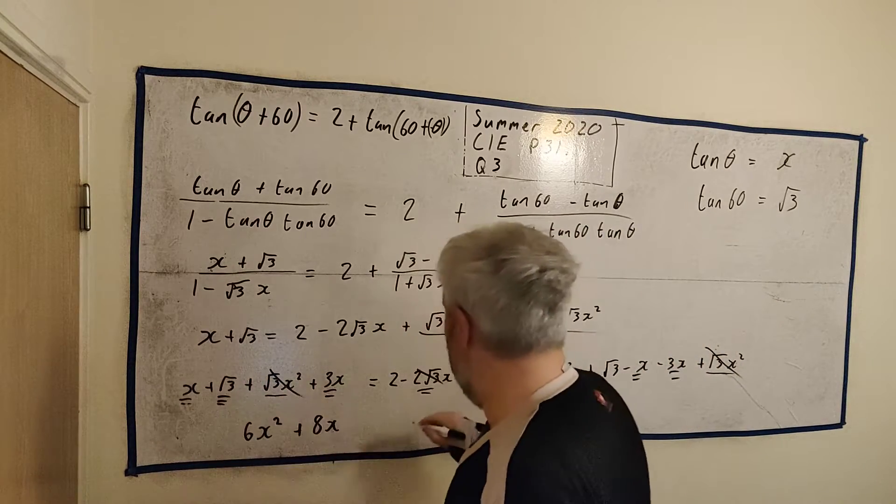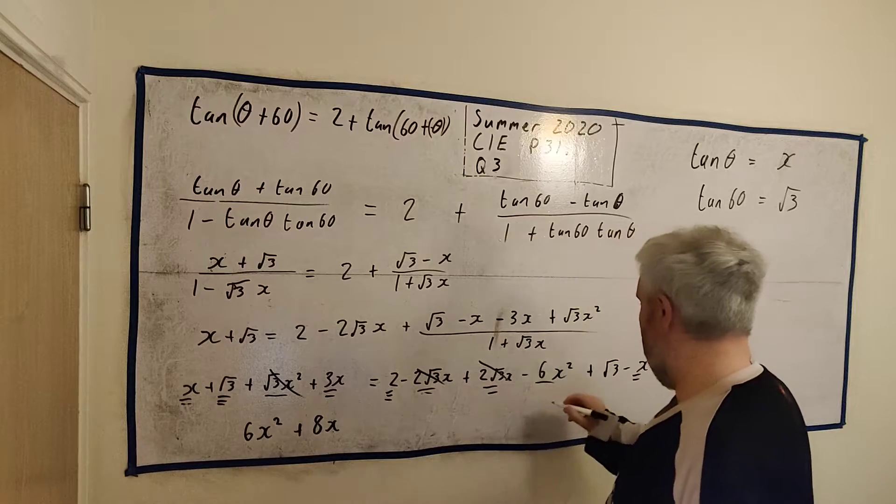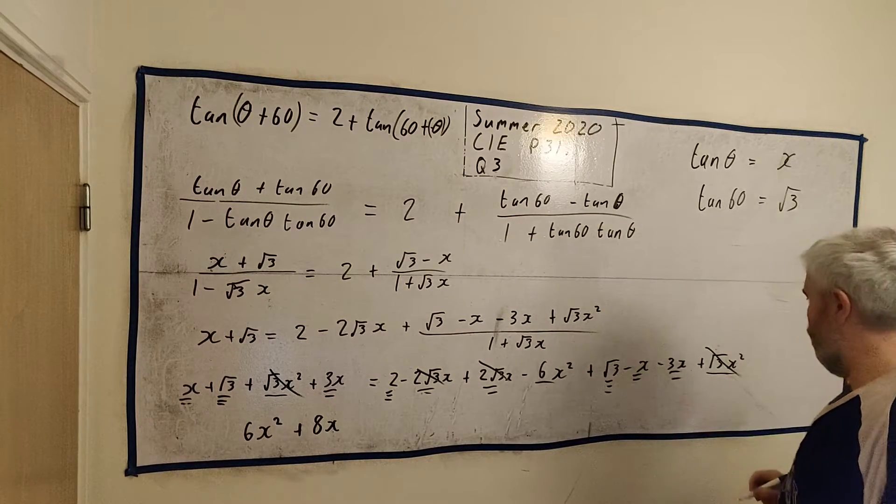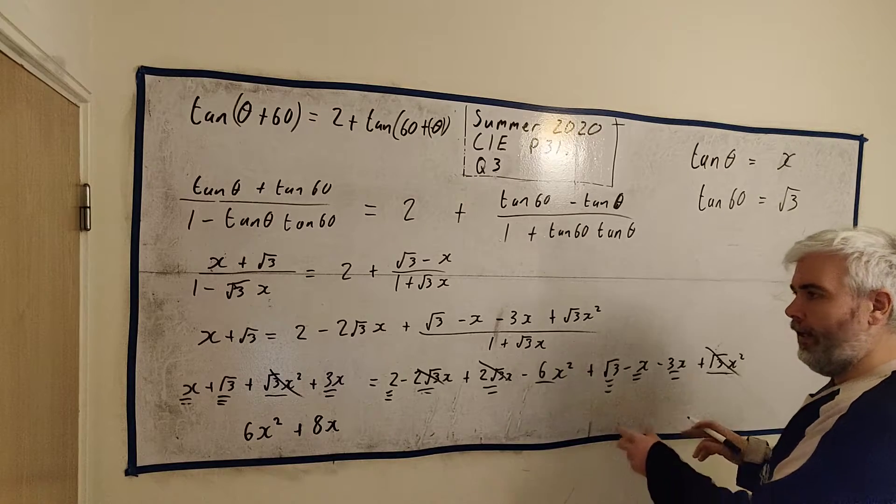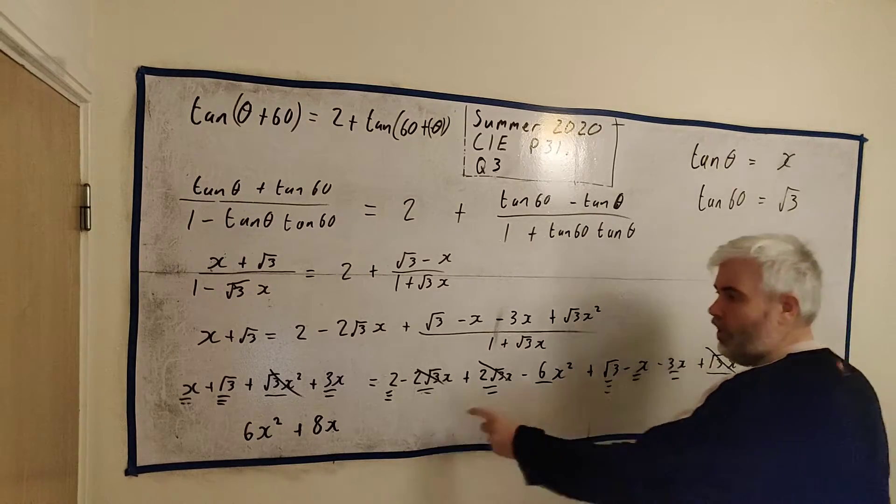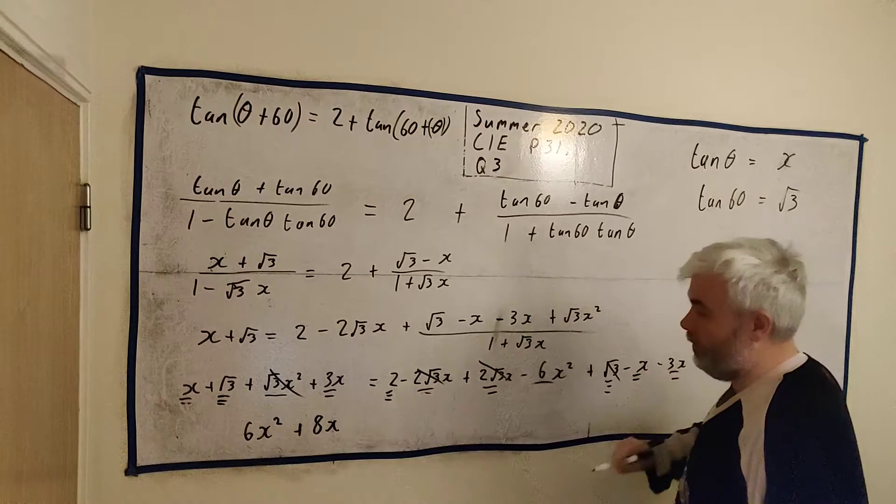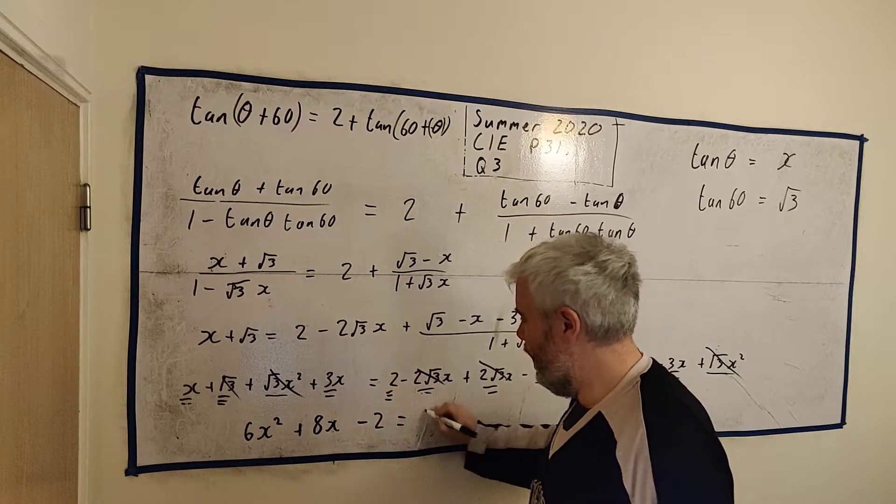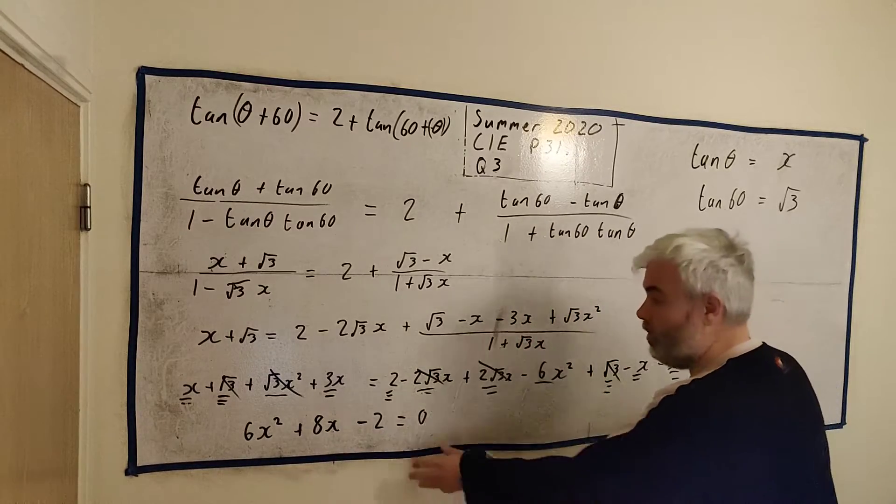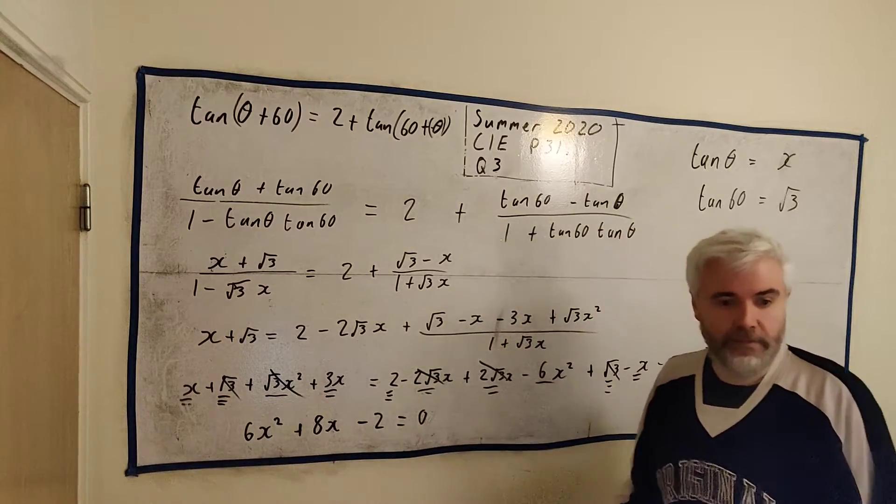This is looking good. No square roots even. All the numbers. We have a √3 and a √3, they cancel. So we're actually just left with the 2. Take it over. Minus 2 equals... There we go. We have our quadratic. That's half the question they asked us for. They said, find a quadratic.